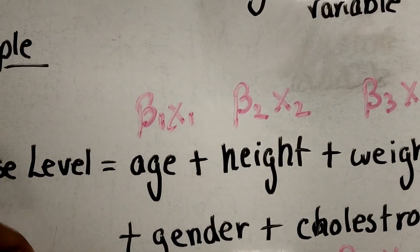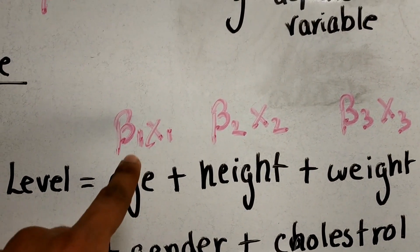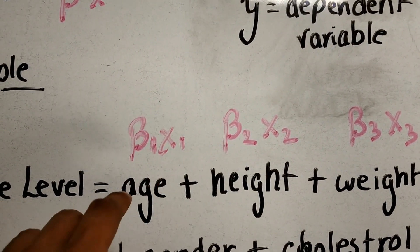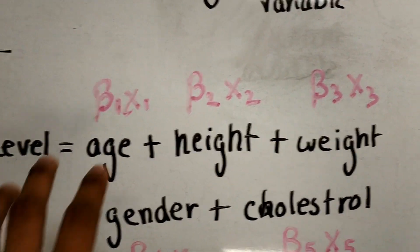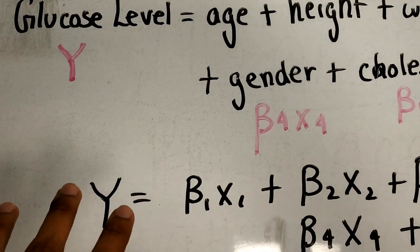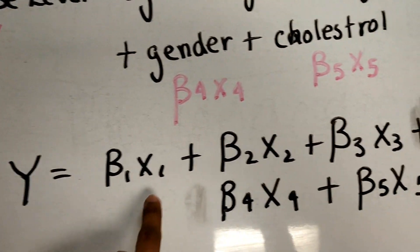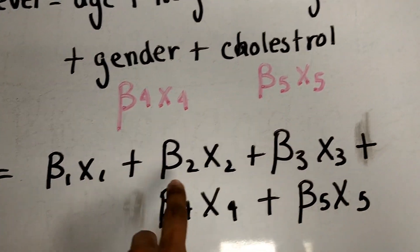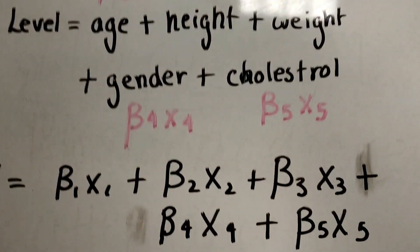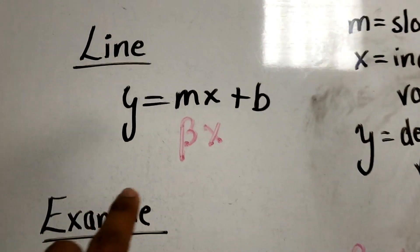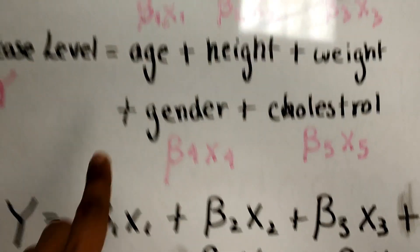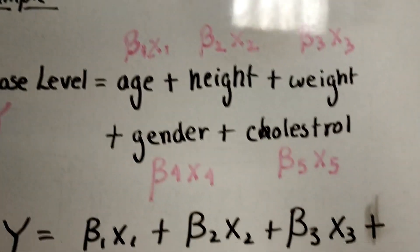So we can rewrite this into the form of beta and x. If we rewrite this in equation form, we get y equals beta1*x1 plus beta2*x2, so on and so forth — similar to our mx, but instead of m, we're just using beta and then multiple x's.